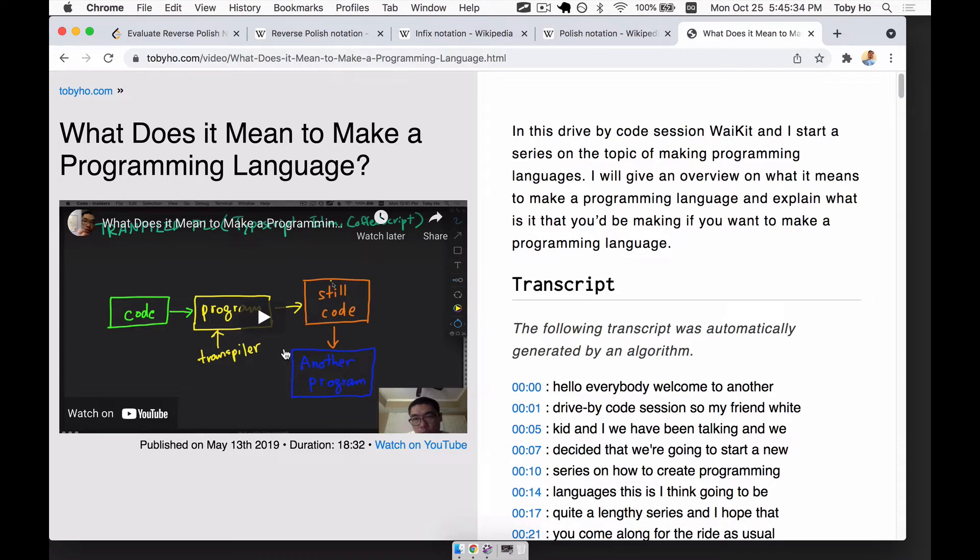If you're new to compilers or how to make programming languages, I recommend you watch this video first, entitled What does it mean to make a programming language? This video will give you a high level structure of what are the different parts in a compiler, which is the thing you would be making if you were to make a programming language. It will show you the different parts, how they fit together. It will give you a map. So watch this and then come back to this series.